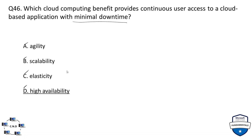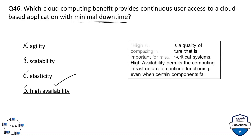The correct option is high availability. Downtime is directly opposite to availability, so high availability gives us minimal downtime. High availability is a quality of computing infrastructure that is important for mission-critical systems — it permits the computing infrastructure to continue functioning even when certain components fail.